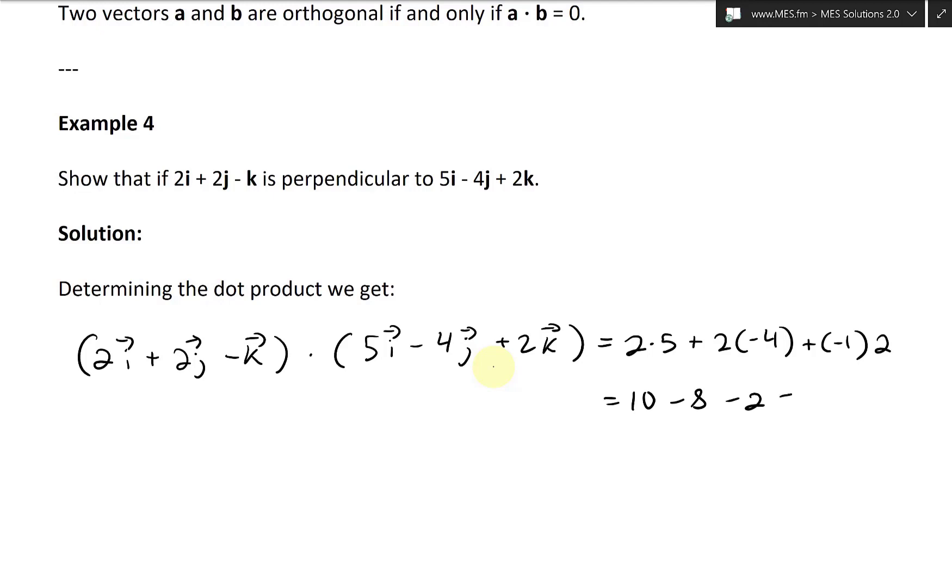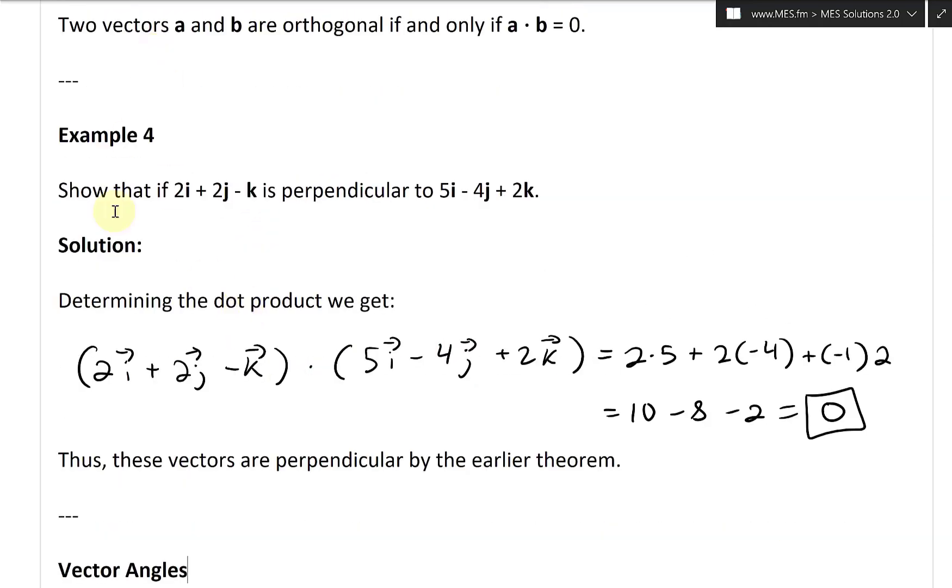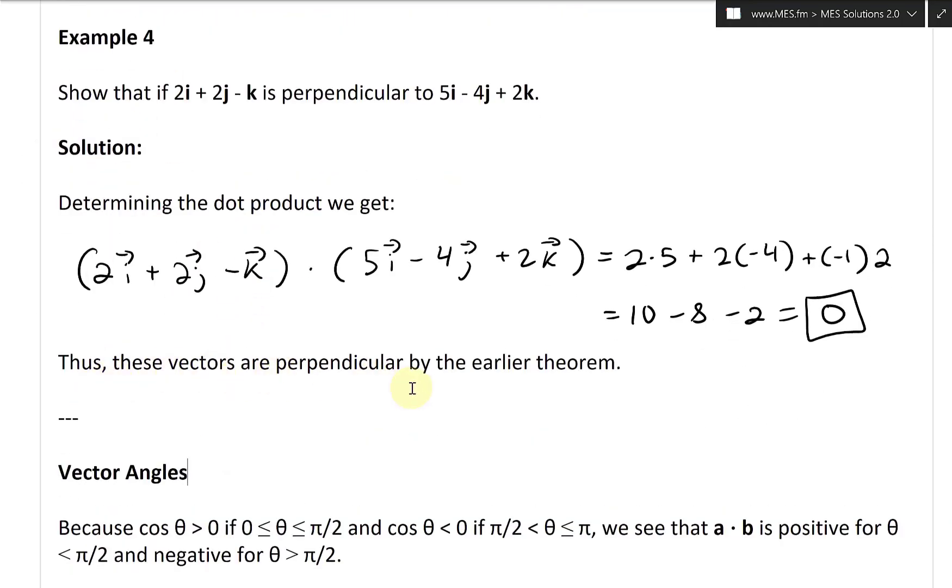And yeah, that's just 10, so this equals zero. Yeah, so it is orthogonal or perpendicular. Perfect. So finish off example four. Thus, these vectors are perpendicular by the earlier theorem.